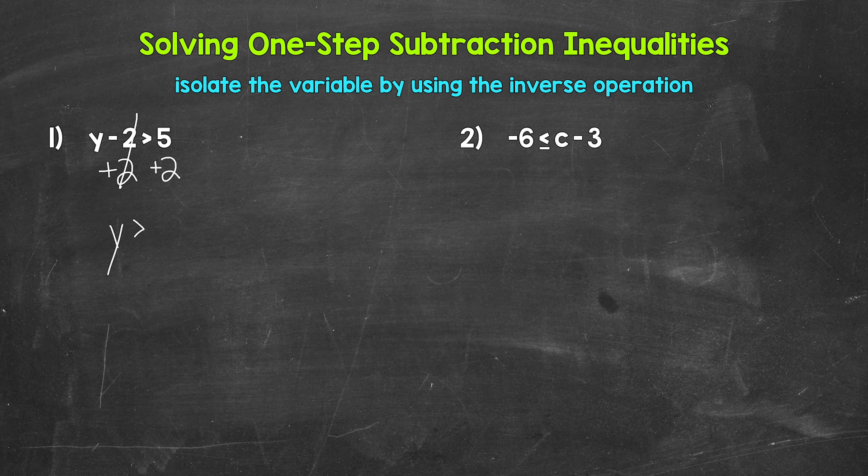So y is now isolated. We have y is greater than. And then on the right side, five plus two gives us seven. So y is greater than seven. And that's our answer.